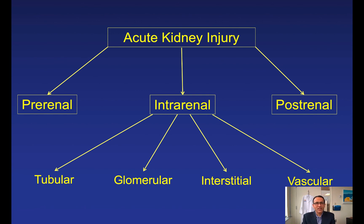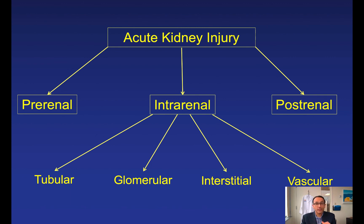Finally, vascular causes — other than those involving the glomerulus. This includes HUS-TTP, or hemolytic uremic syndrome and thrombotic thrombocytopenic purpura, which are thrombotic microangiopathies. HUS has a triad of hemolysis, uremia, and thrombocytopenia. TTP includes those three features plus fever and neurological changes, and is managed with plasmapheresis. Additional vascular causes include the various vasculitides affecting different vessel sizes, which will be covered in a separate talk; a rheumatologist should be involved.